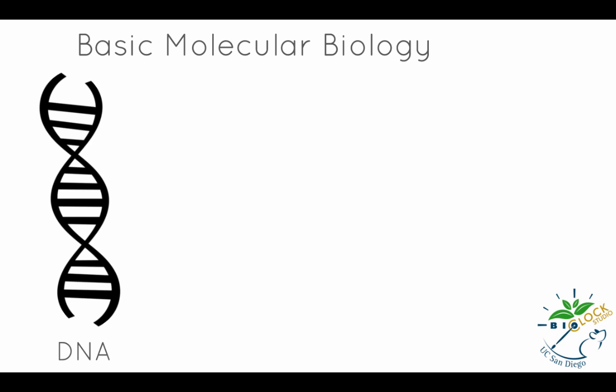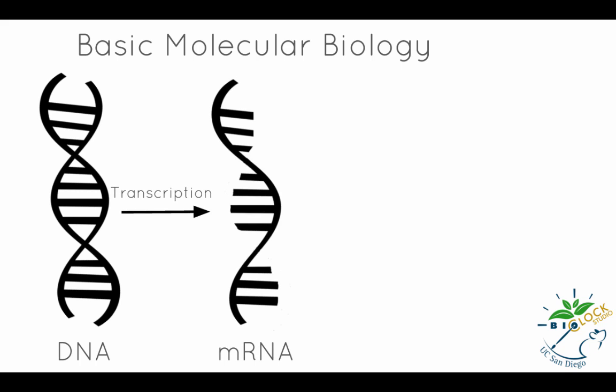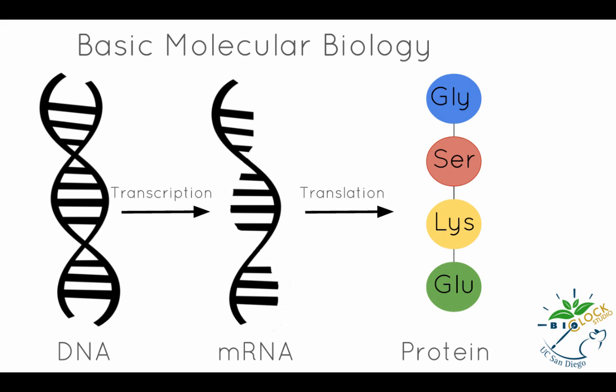The first step of conversion from DNA to protein is transcription. Transcription is the process of making a messenger RNA from DNA. The next step is translation, where the mRNA is converted to a sequence of amino acids resulting in a protein product.